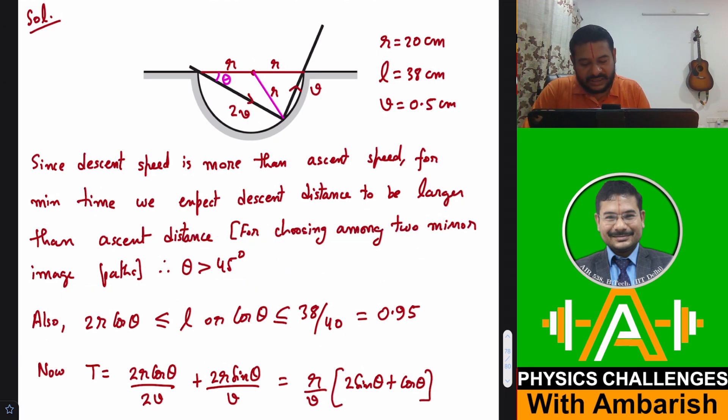And also we can say that 2R cos θ must be less than or equal to L. So this distance is 2R cos θ. Maximum length of the stick is 38 cm, so that means this part must be obviously less than or equal to 38 cm. Or we can say cos θ must be less than or equal to 38 by 40, if you calculate that 0.95.